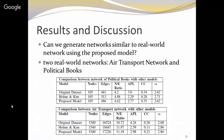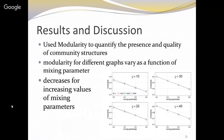We also raised the question: are these models good enough even after including the mixing parameter and communities to generate real-world networks? We tried to generate two real-world networks — the air transport network and the political books network. This model is actually able to generate similar networks to the real-world networks.